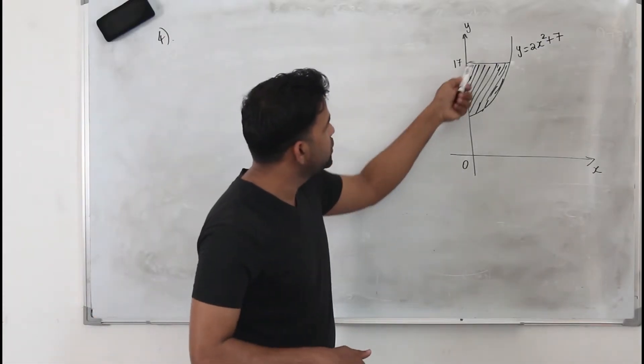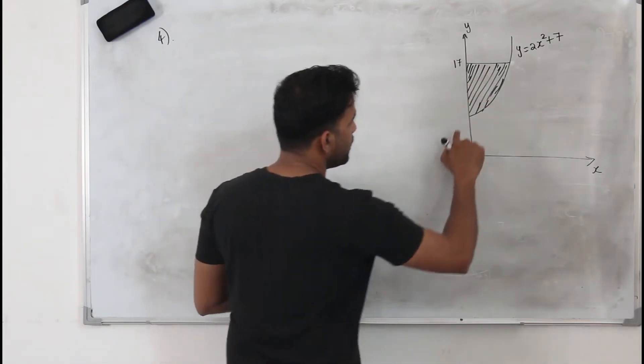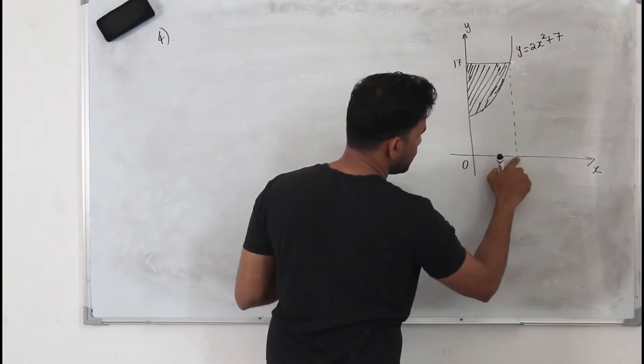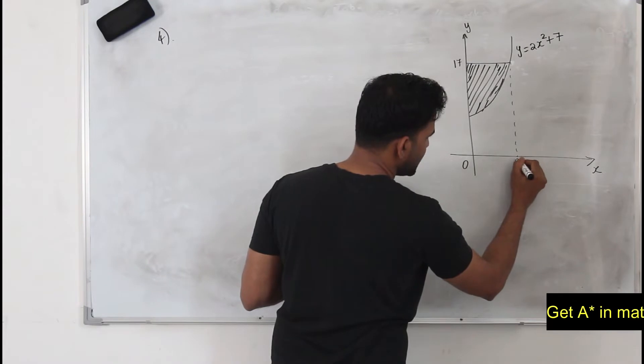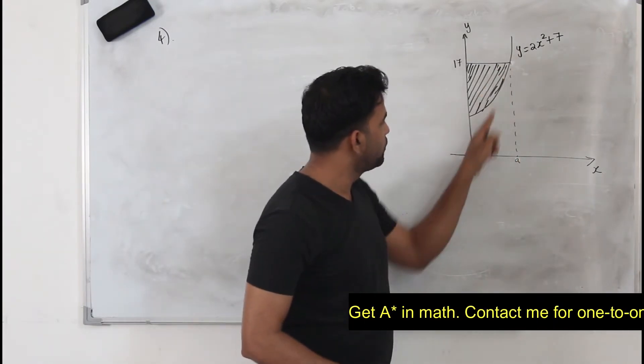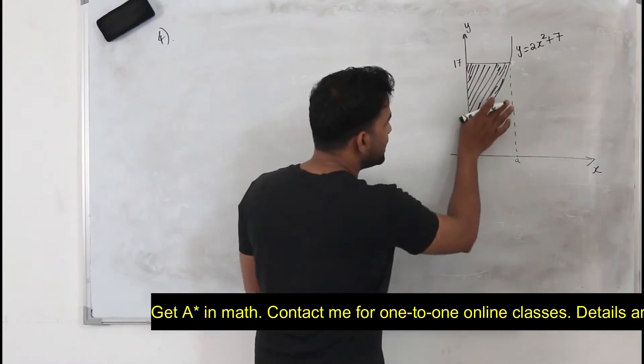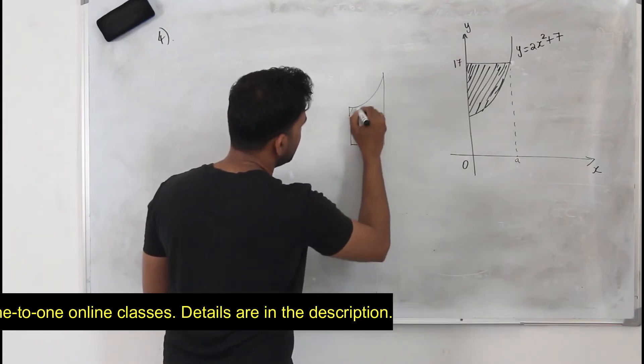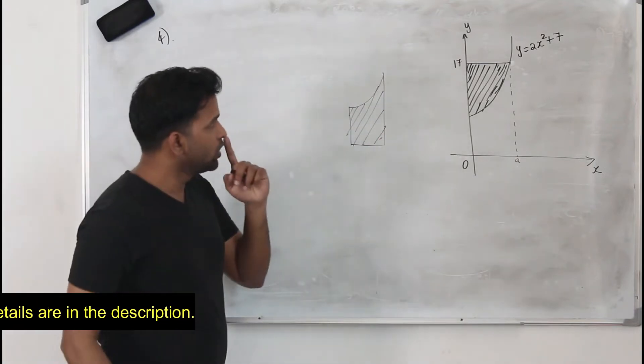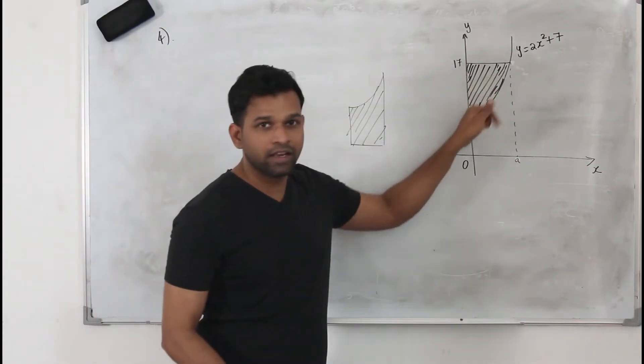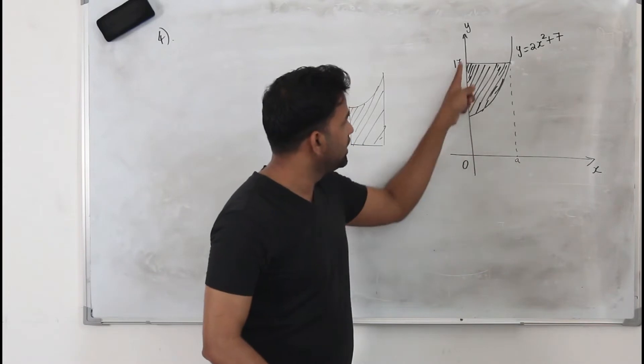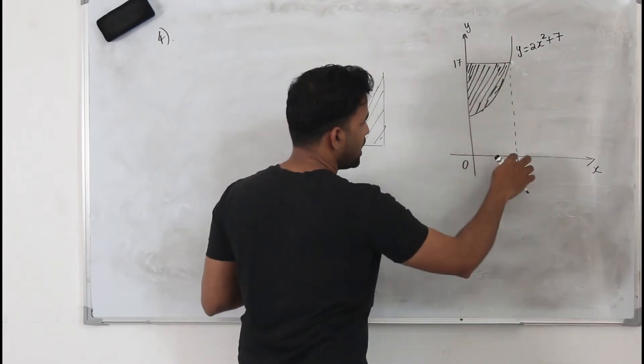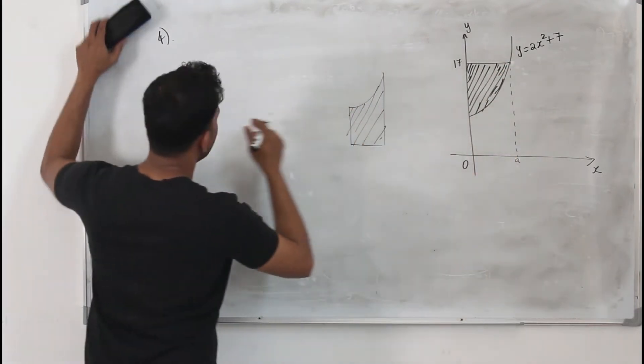Look at the figure. We need to find this shaded region. When you integrate this function from this point 0 to whatever this point, let's say A, you will get the area below the curve. So if you want to find this shaded area, you find the area of this rectangle minus this area. That means you need to find the area of rectangle first and then minus this area.